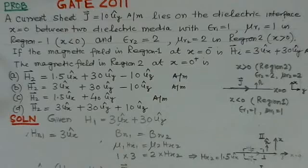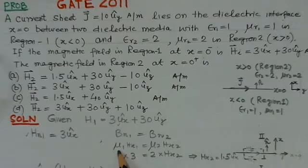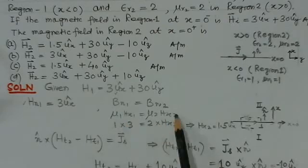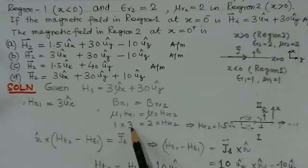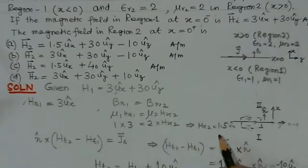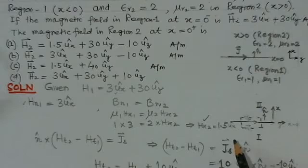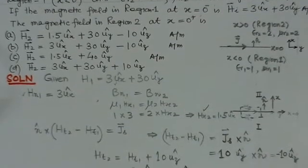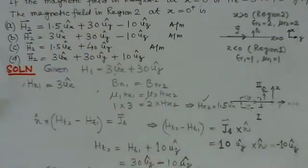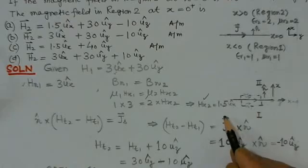Now applying the boundary condition B_n1 = B_n2, we apply μ_1 H_x1 = μ_2 H_x2. Now μ_1 and μ_2 are known, this is 1, H_x1 value is given as 3, and H_x2 we have to find. So we get the value for H_x2 as 1.5u_x. That means the normal component of the magnetic field in region 2 is 1.5u_x.